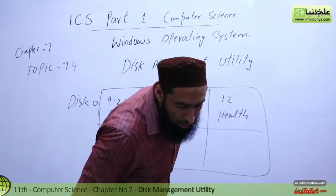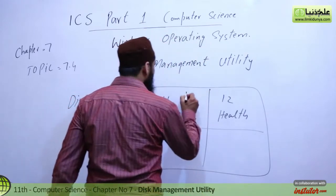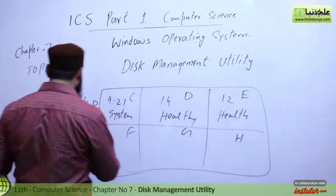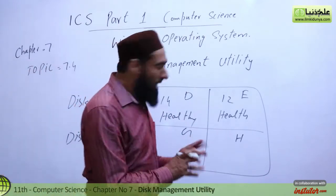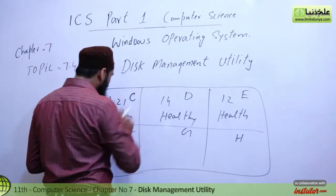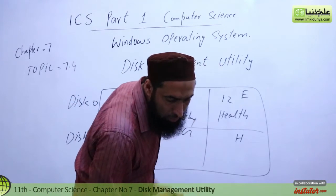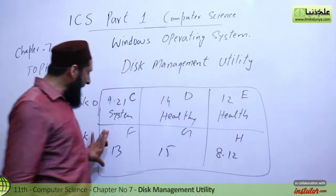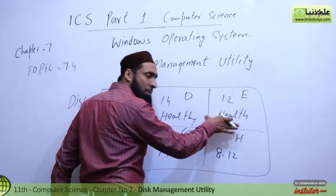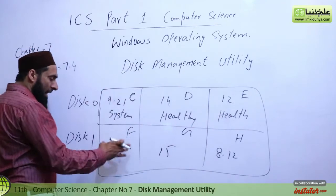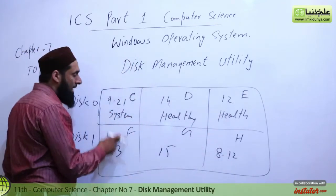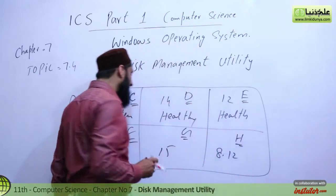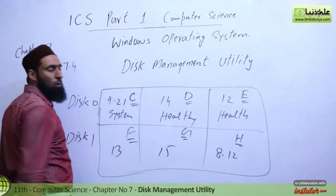We have seen drive names like C, D, E. The other parts are named F, G, H. These are simple partitions — we have 3 parts of the partition, which are of different sizes: 13, 15, and 8 or 9. These are also primary partitions.